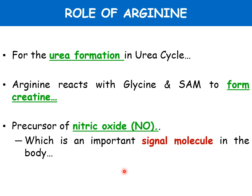Regarding the roles of arginine: first, it is essential for urea formation in the urea cycle. Second, arginine reacts with glycine and methionine to form creatine, which connects the metabolism of glycine and methionine. Third, and very importantly, arginine is a precursor of nitric oxide, which is an important signaling molecule in the body and an important neurotransmitter that helps in vasodilation. The metabolism of nitric oxide will be covered in detail in the next video.